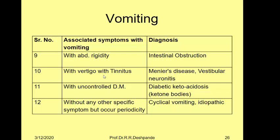Vomiting with uncontrolled diabetes mellitus may suggest diabetic ketoacidosis with unconsciousness, with elevated ketone bodies. Vomiting without any accompanying specific symptoms or disease, occurring periodically, can be labeled as cyclical vomiting or idiopathic vomiting.